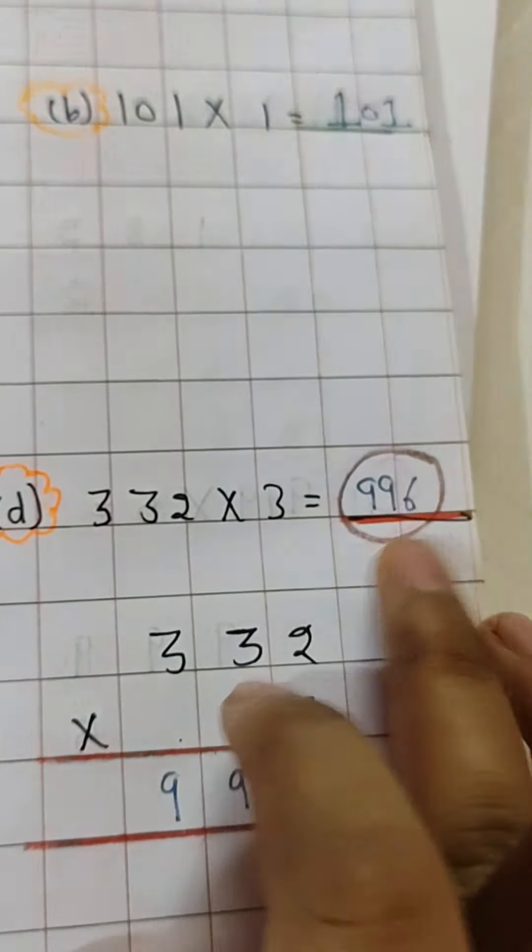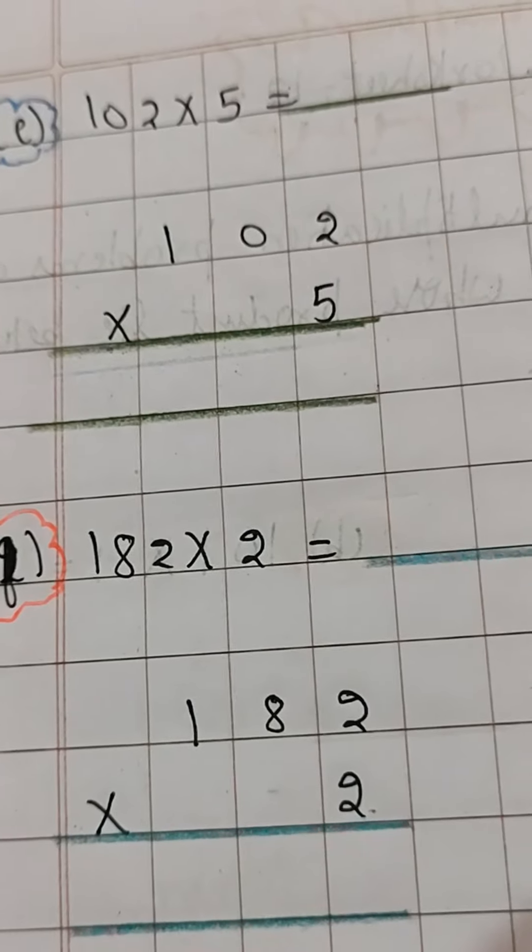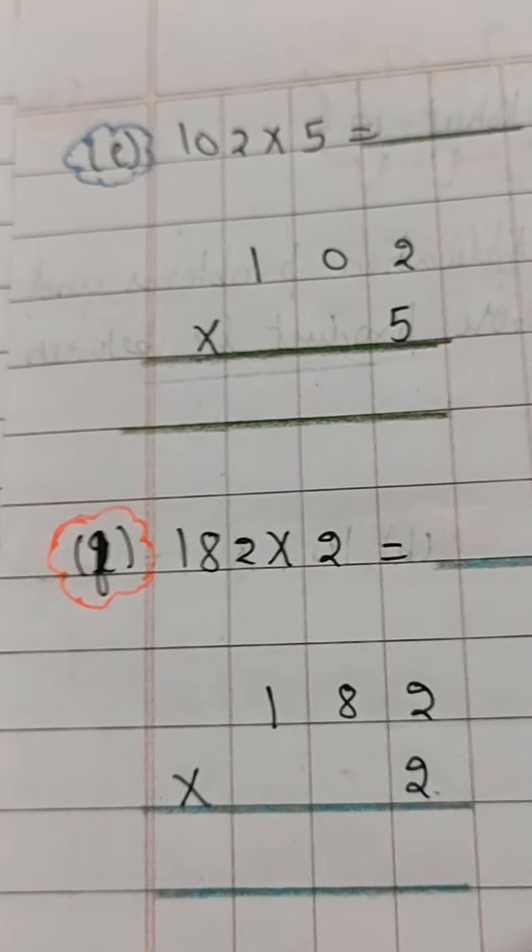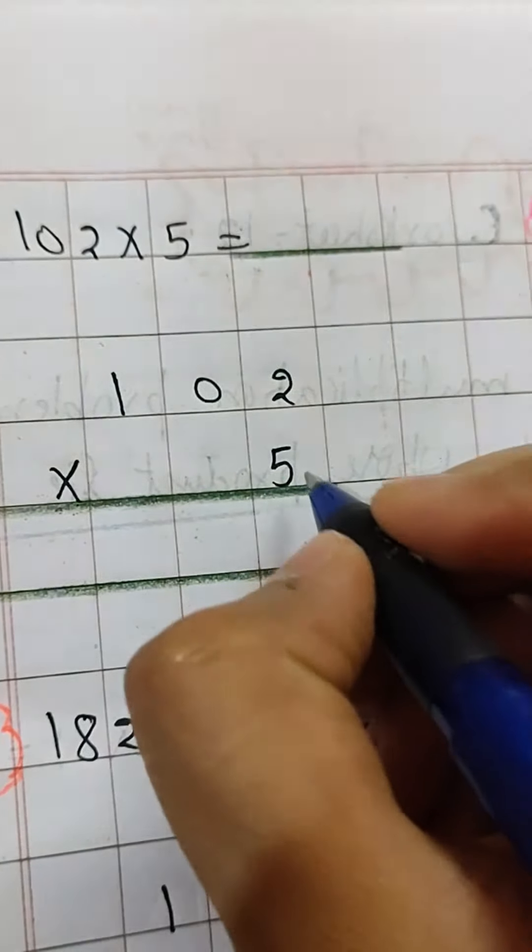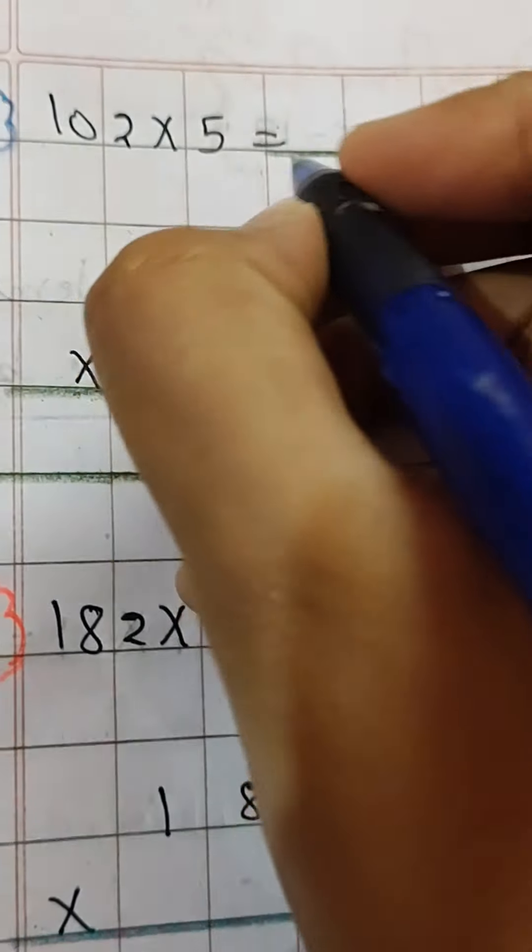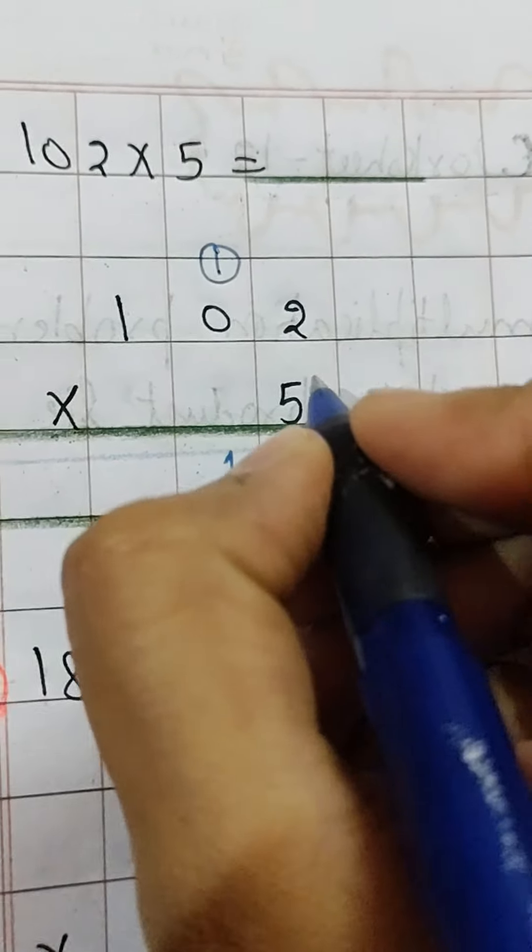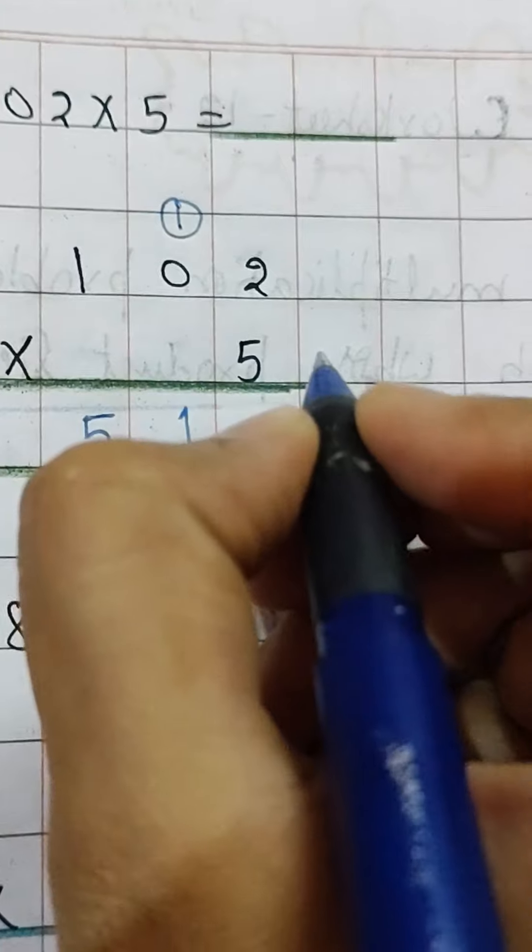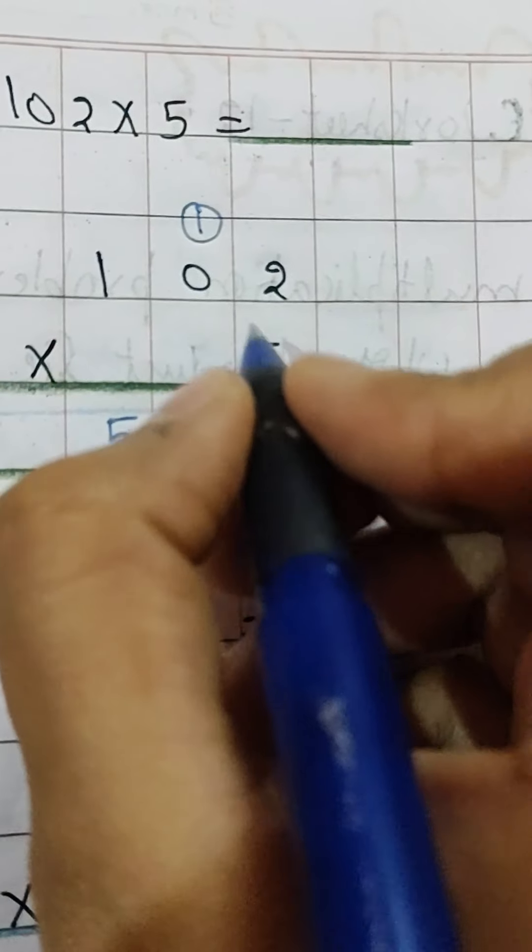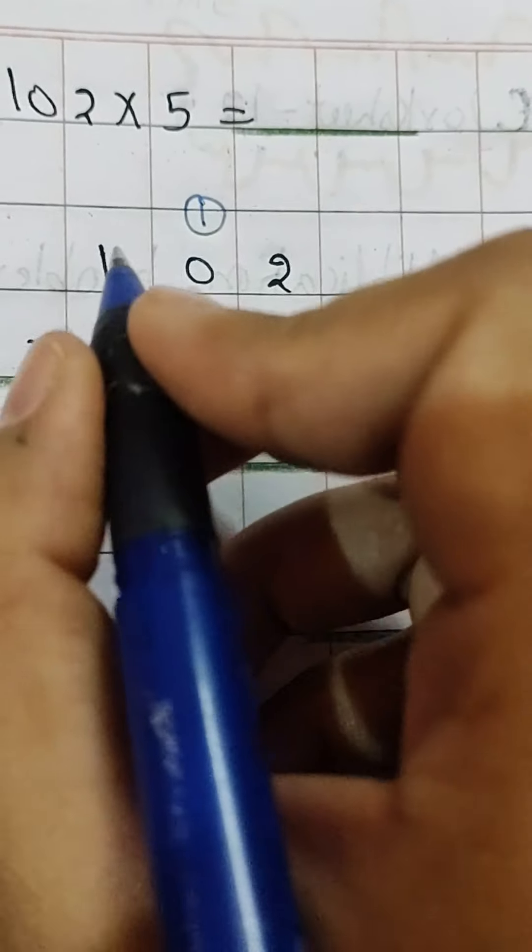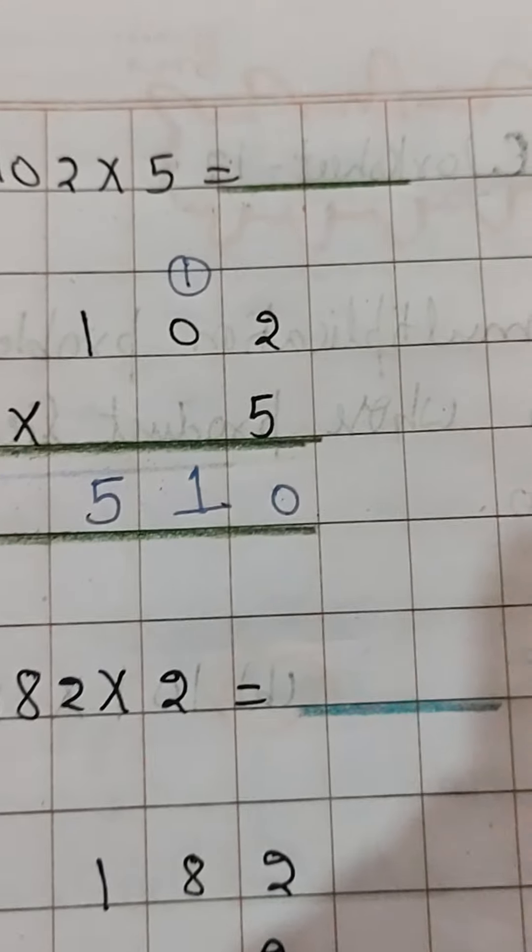Now I will do one more for you and every other one is your homework. 510 multiply by 10: 0 times 1 is 0, 5 times 1 is 5. So 510, answer is 510. This also comes in between 500 to 3000, so you will circle this one also.